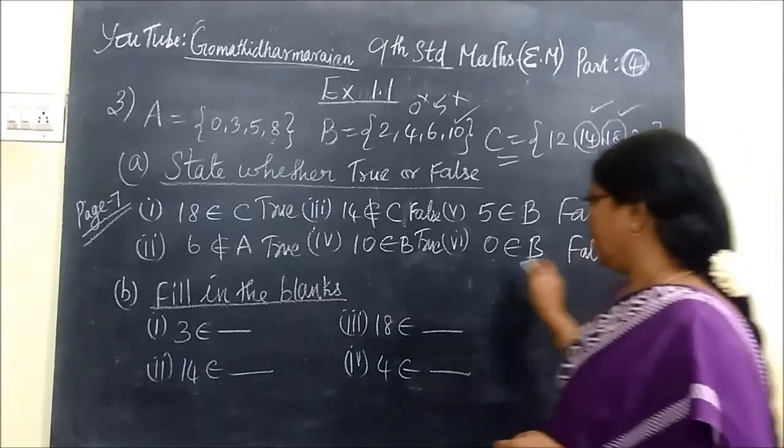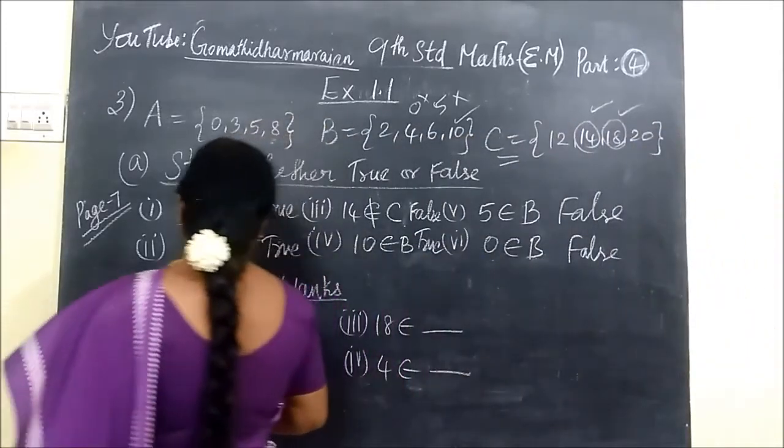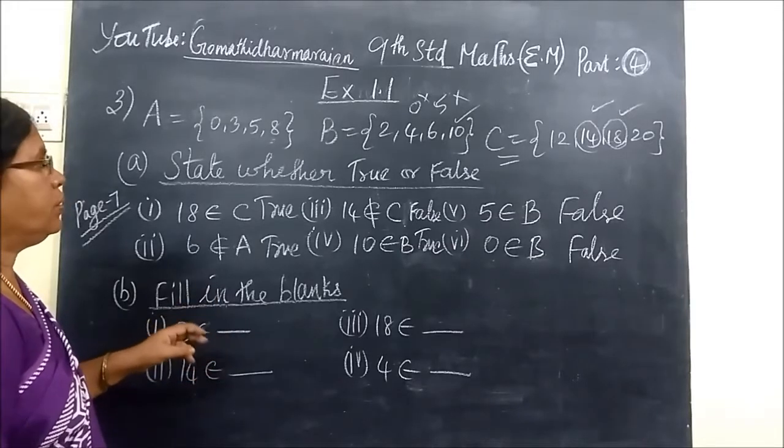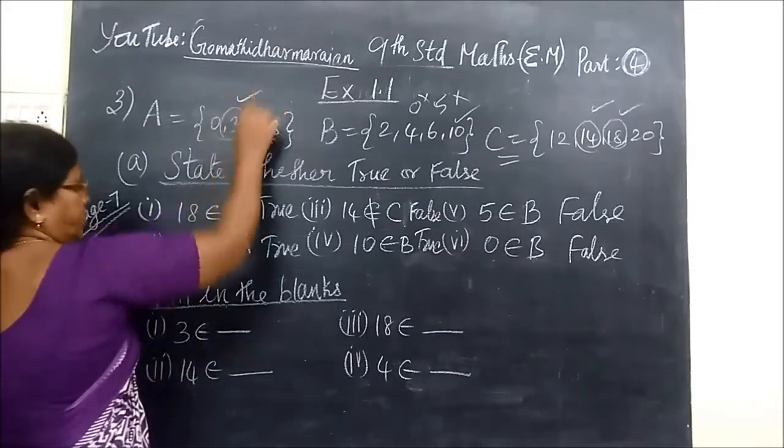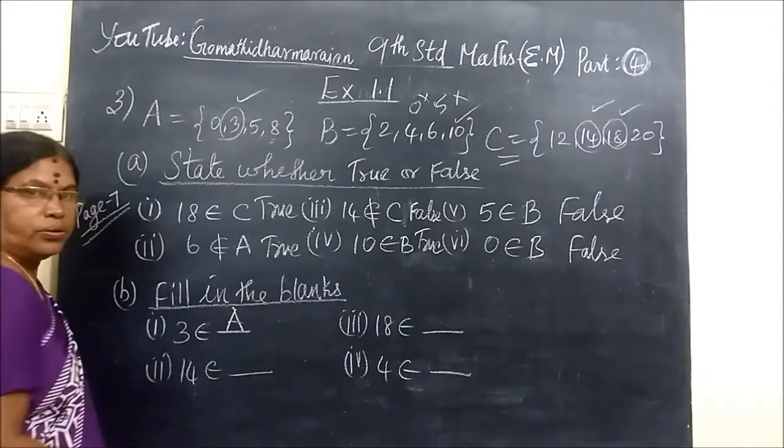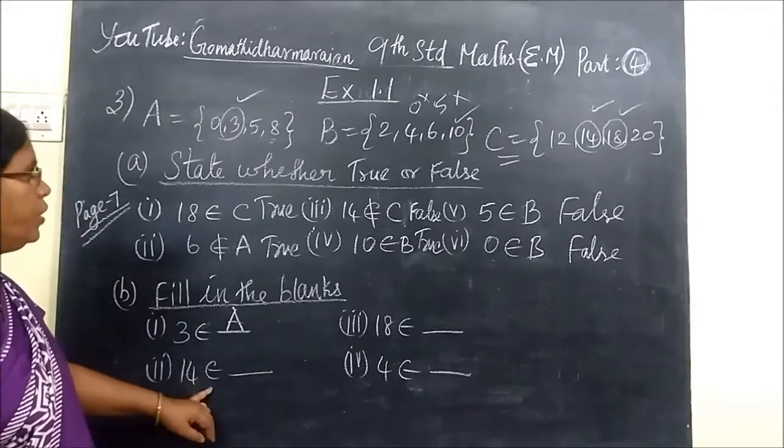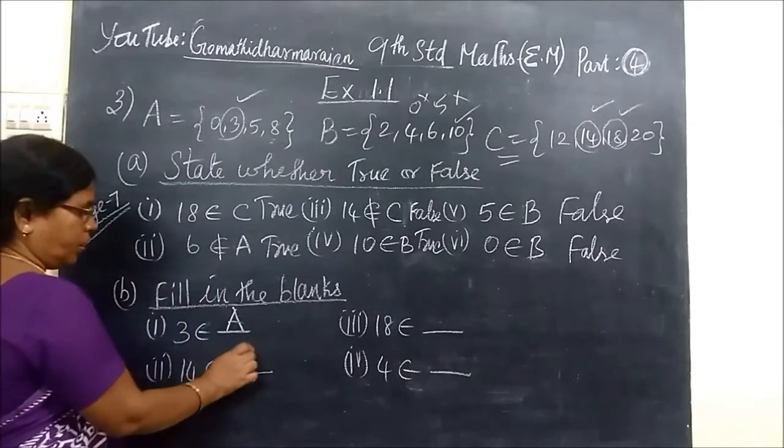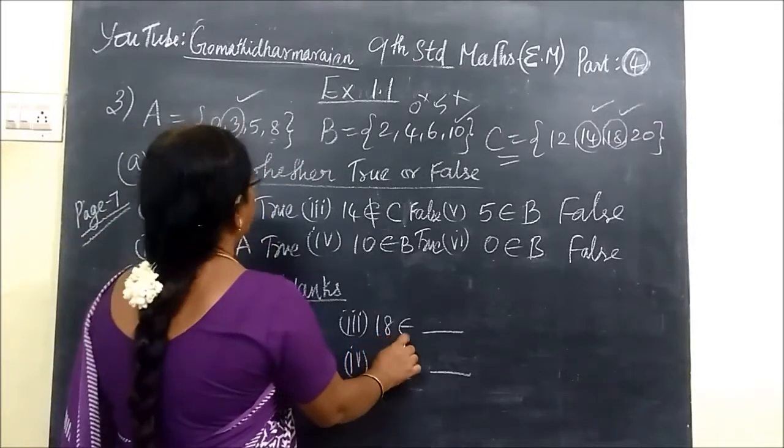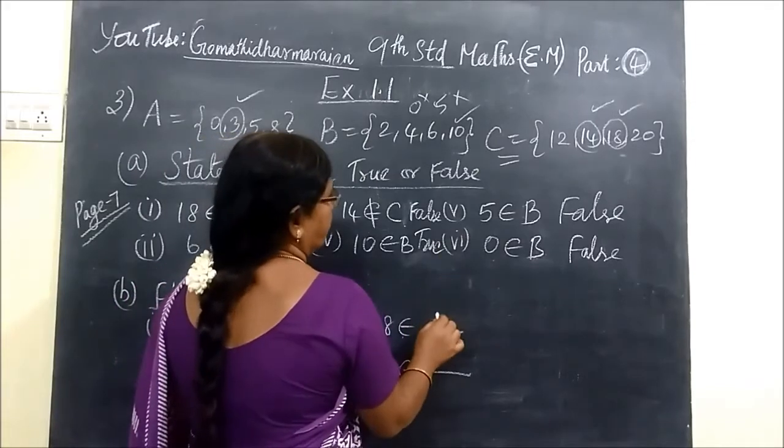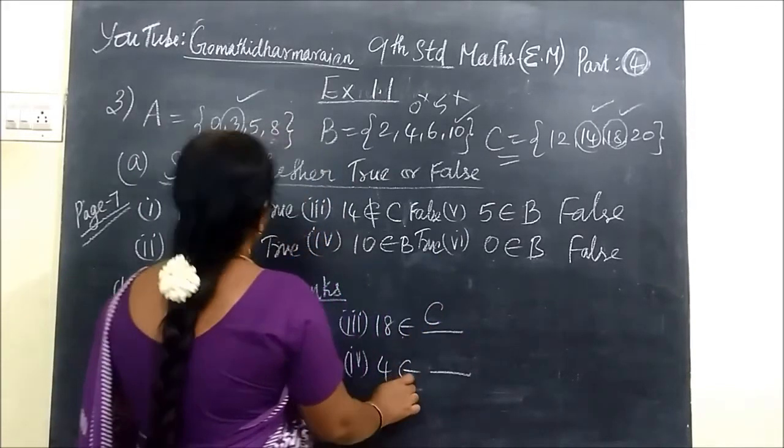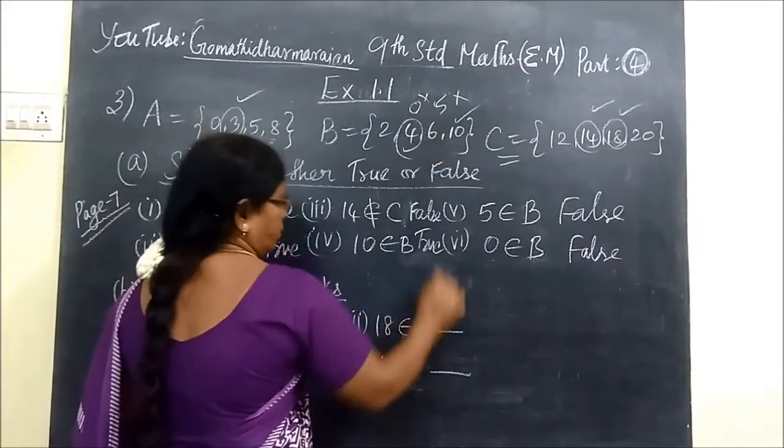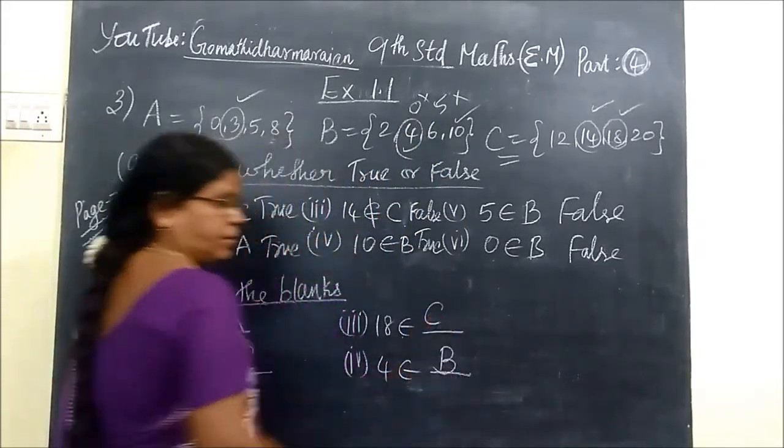Next one, fill in the blanks. 3 belongs to what set? 3 is the set of A. Here 3 is here, so 3 belongs to A. Then 14 belongs to C. 18 belongs to, where is 18? 18 belongs to C. Then 4 belongs to, 4 belongs to here, the set B.